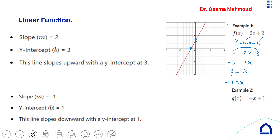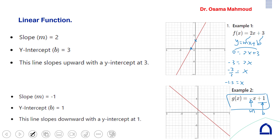For this next function, the slope is minus 1 and the y-intercept is 1. To graph it, the line intersects the y-axis at 1. To find the x-intercept, put the function equal to 0: minus X plus 1 equals 0, giving X equal to 1. The line intersects the x-axis at 1 as well. Link these two points and extend them to draw your line.